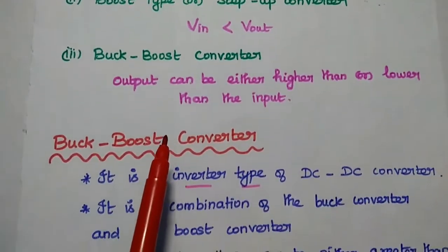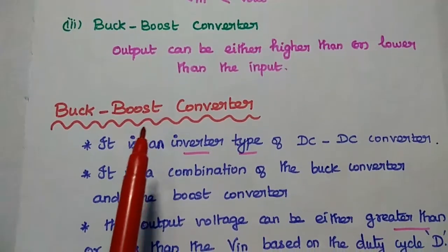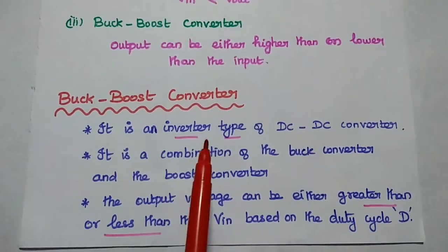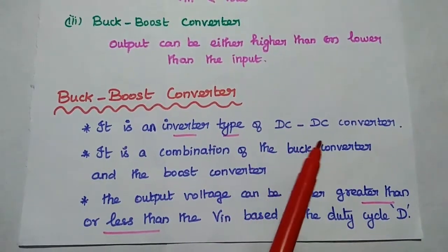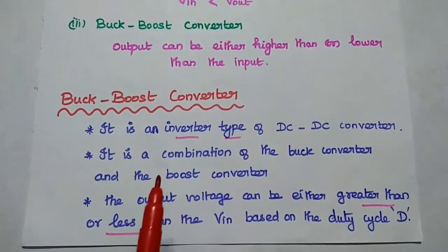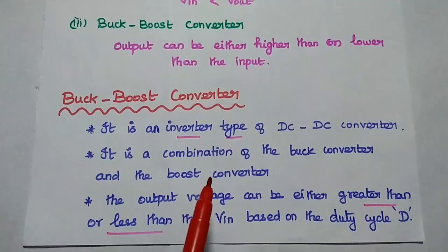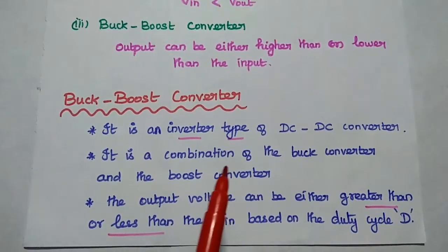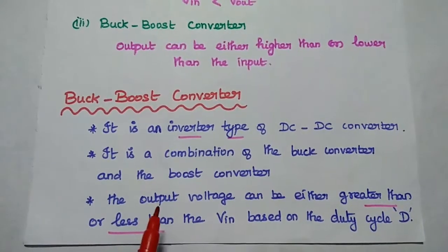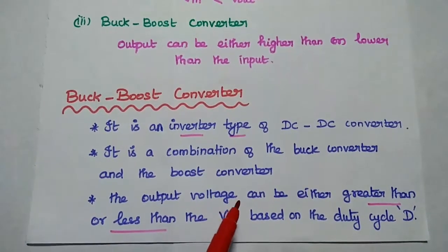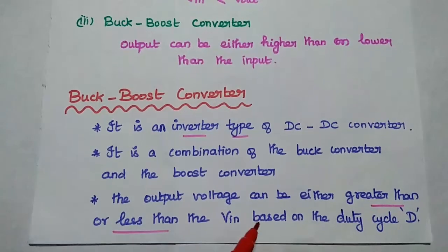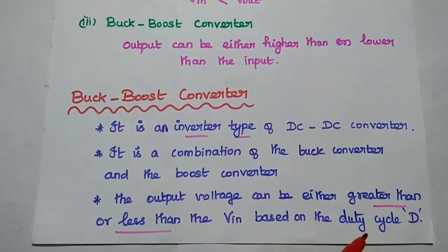In this lecture video, we are going to discuss the buck-boost converter in detail. It is an inverting type of DC to DC converter — a combination of buck converter and boost converter, that is a combination of step-up and step-down converters. The output voltage can be either greater than or less than the input voltage, which is based on the duty cycle.